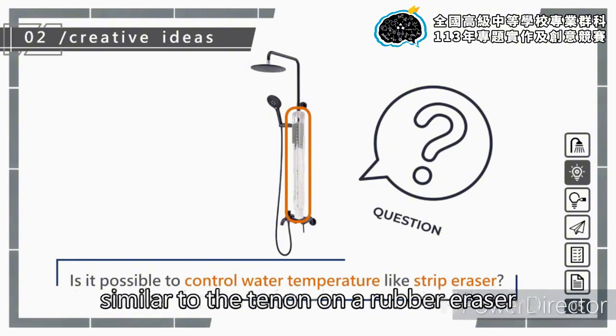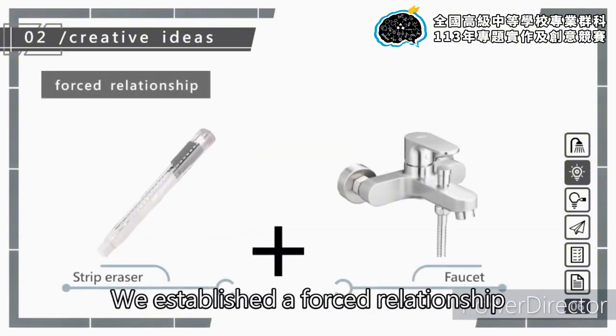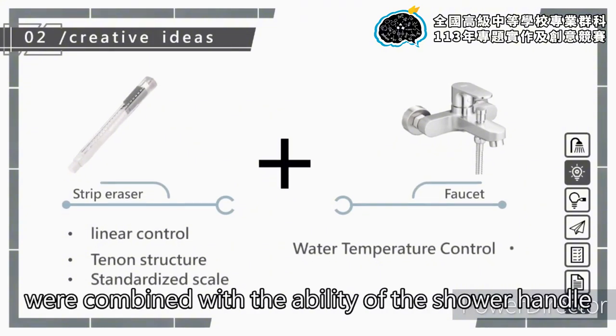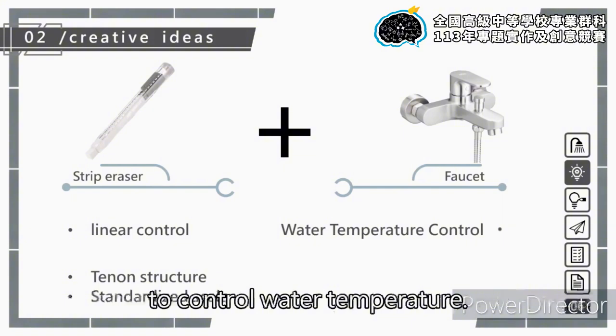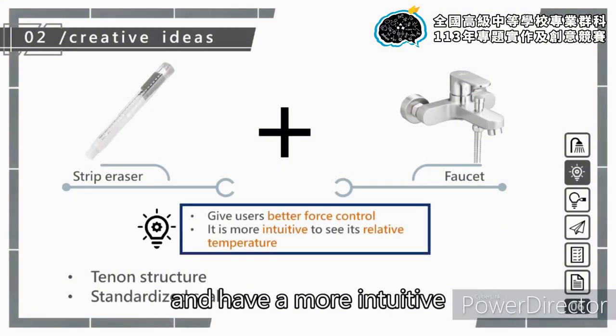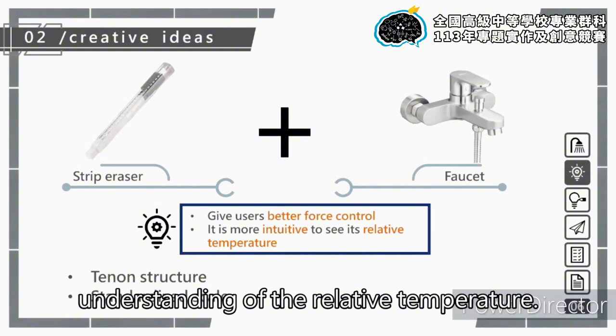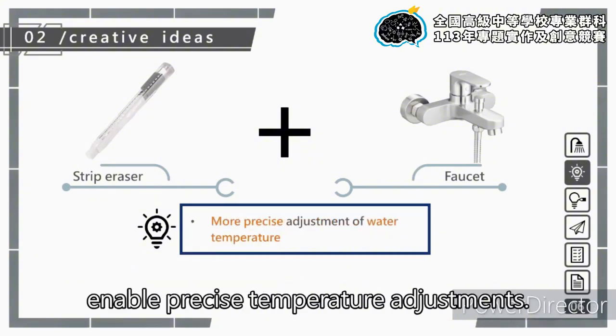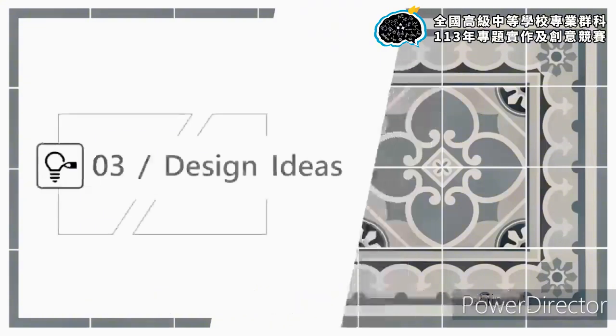We established a forced relationship between the rubber eraser and the shower set. The linear control, standardized scale, and tenant structure of the eraser were combined with the ability of the shower handle to control water temperature. This integration allows users to exert better control and have a more intuitive understanding of the relative temperature. The tenant structure prevents accidental adjustments and the standardized scale enables precise temperature adjustments.